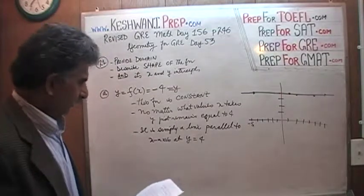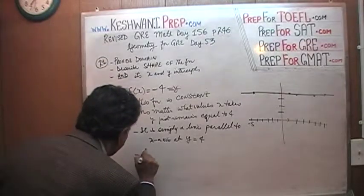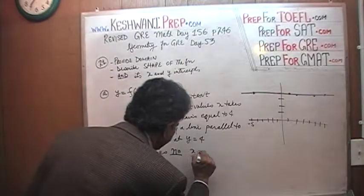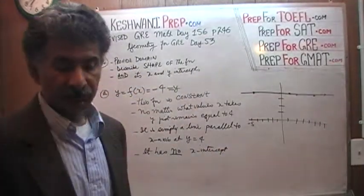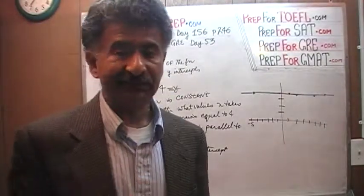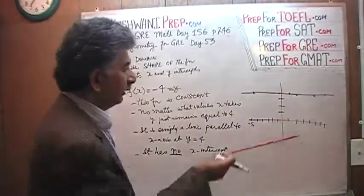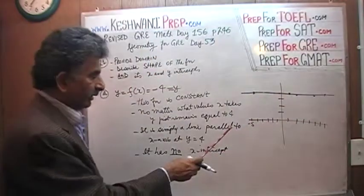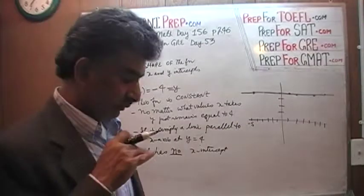It has no X-intercept. Why would it have an X-intercept? The X-intercept tells you where the line cuts the X-axis. How can it possibly cut the X-axis when it is parallel to it? It is always going to remain parallel — no matter how high or how low the value of X is, it is always parallel, because the value of the function is always 4.